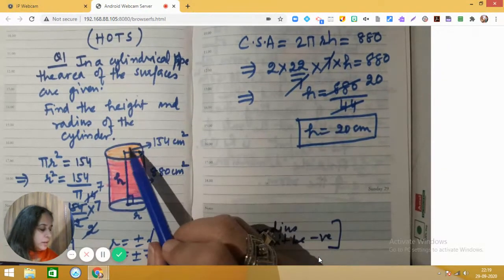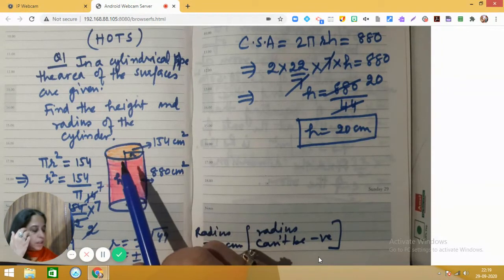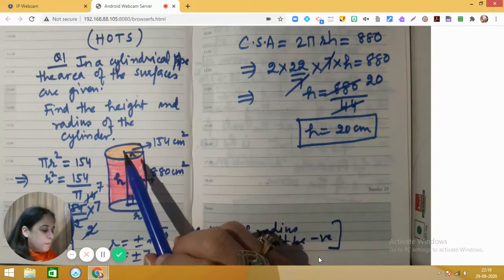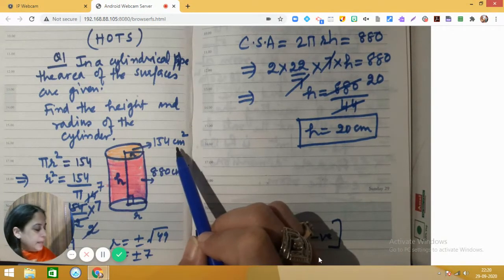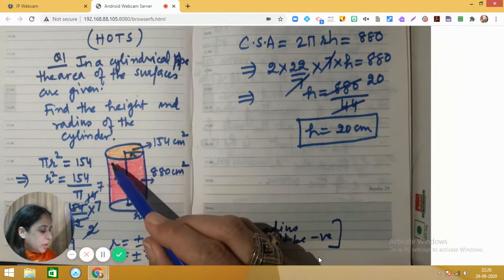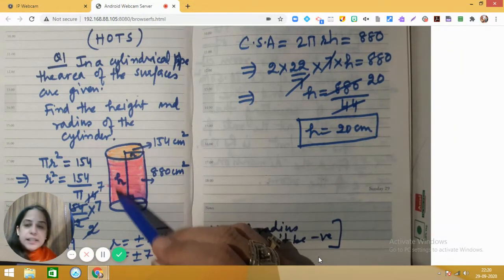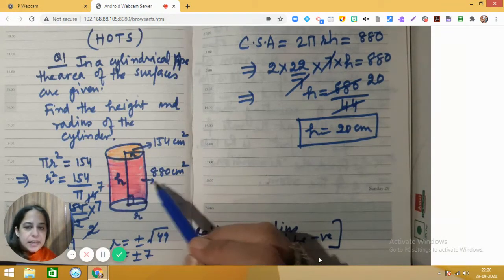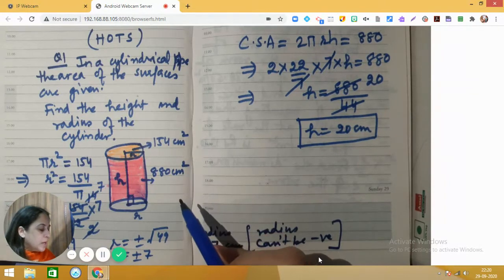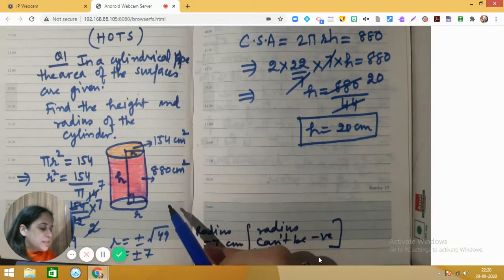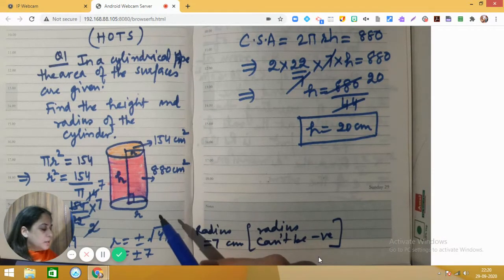You can see that here there is a cylindrical pipe and we are given the area of the top surface as 154 centimeters square and area of the curved part of the cylinder is 880 centimeters square, and we need to find out the height and radius of this pipe.